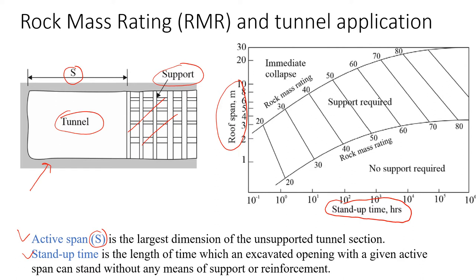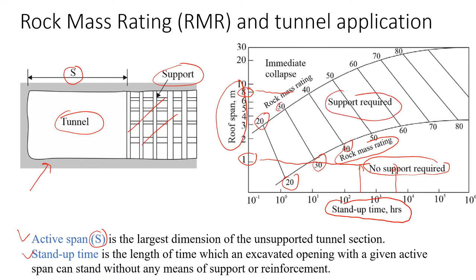For example, if we would like to have a tunnel with a roof span of one meter, you will see that looking at different times, it's going to be stable — here it says no support required. On the other hand, if we have a rock mass which is pretty weak and we want to build a span of eight meters, you will see that there will be immediate collapse and the tunnel will be unstable.